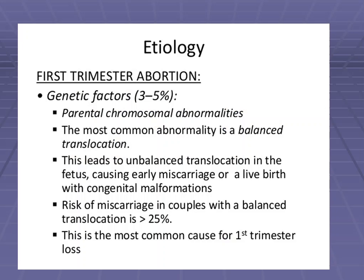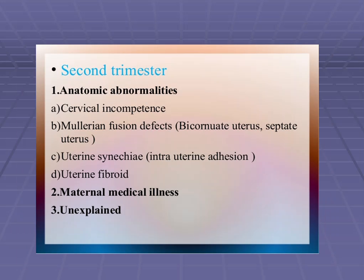The causes are divided into first and second trimester. Under the first trimester, they are mostly genetic factors — parental chromosomal abnormalities such as balanced translocation and unbalanced translocation. The risk of miscarriage is greater with balanced translocation, and this is the most common cause of first trimester loss. In the second trimester, anatomical abnormalities such as cervical incompetence — where the cervix is incompetent and gets dilated before the labor process — are the main causes.